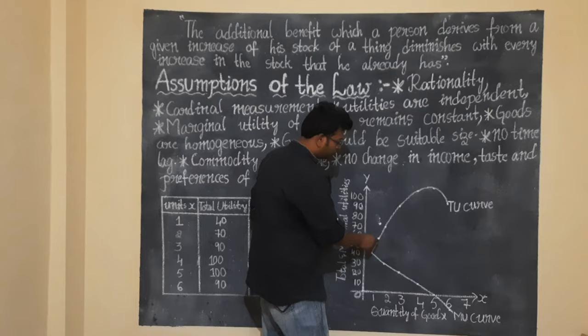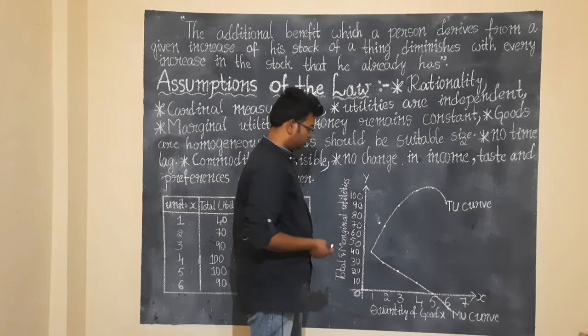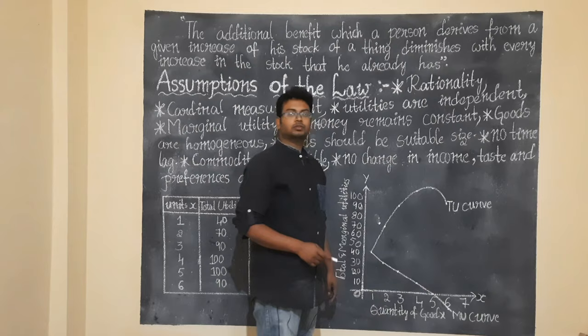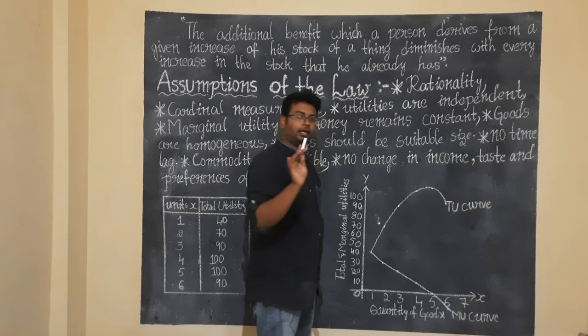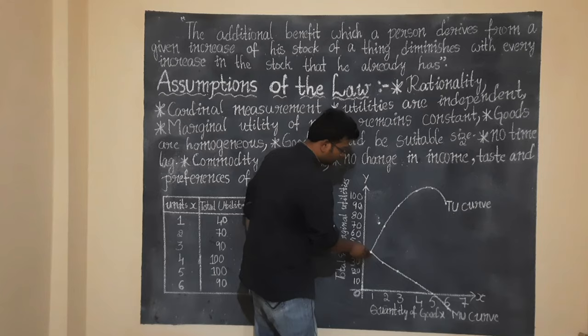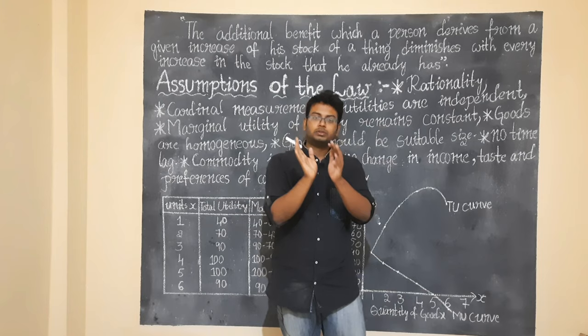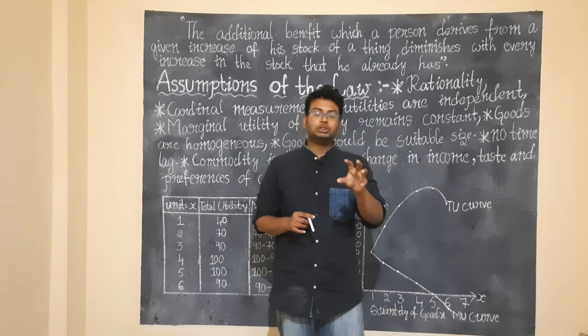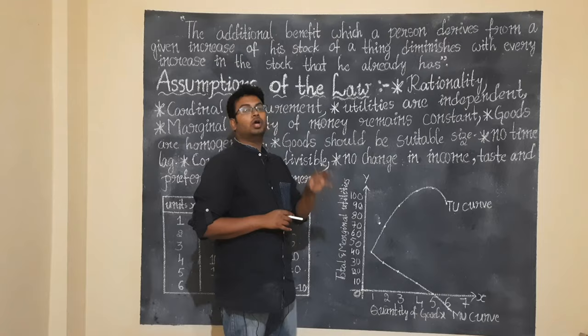Total utility continues to increase but at a decreasing rate, then flattens and falls. Marginal utility starts high and keeps stepping down. The Law of Diminishing Marginal Utility means that marginal utility for each additional unit decreases. At the 5th unit, marginal utility reaches zero; beyond that, it becomes negative. Goods are homogeneous, there is no time lag, and the utilities of different units are independent.